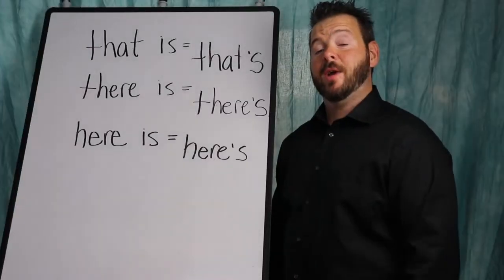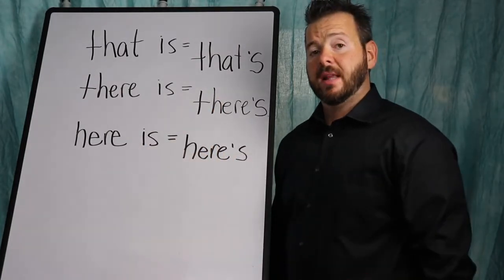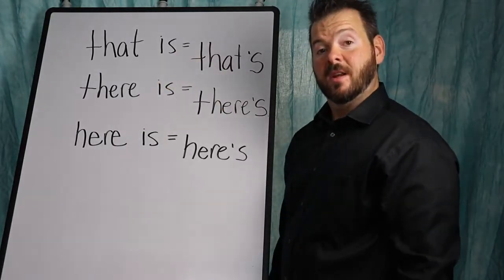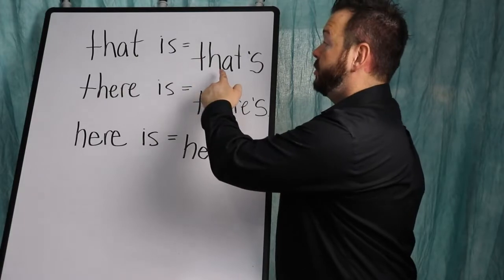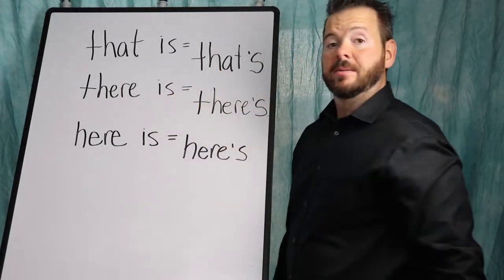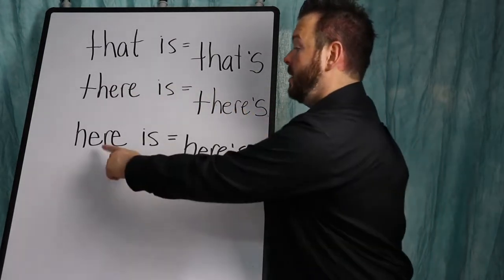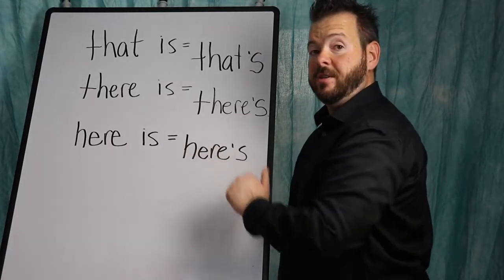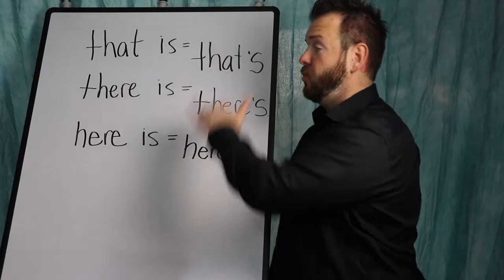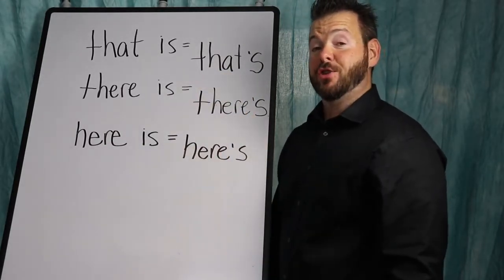Okay, now that we have the first couple of stuff down, here are just some, a few extras, just to make life a little easier. That is, repeat, goes to that's. There is, there's. Here is, here's. You can pause it right now so you can write everything down and you can just say them quickly to yourself before we move on. Make sure you write it down though.